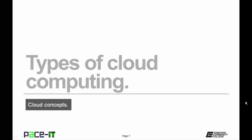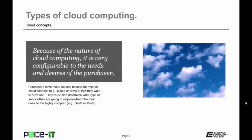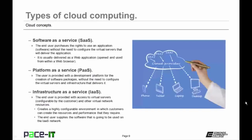Now let's discuss types of cloud computing. Because of the nature of cloud computing, it is very configurable to the needs and desires of the purchasers. They may also determine what type of services they are going to require, from the most basic to the highly complex. There is software as a service, or SaaS — the end user purchases the rights to use an application without the need to configure the virtual servers that will deliver it. Software as a service is usually delivered as a web application, opened and used from within a web browser.